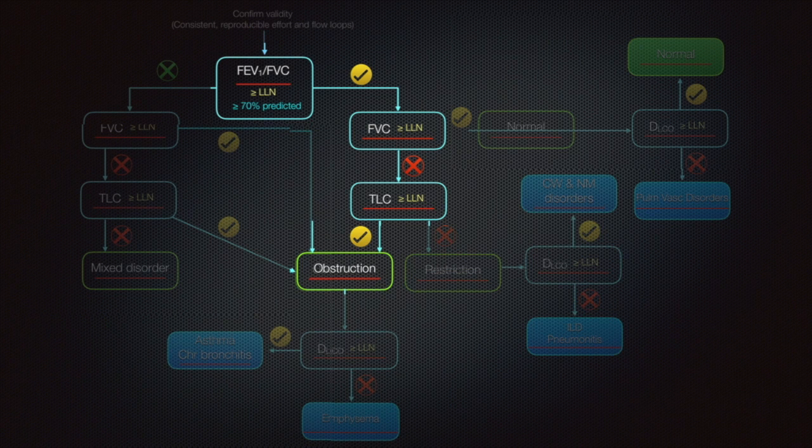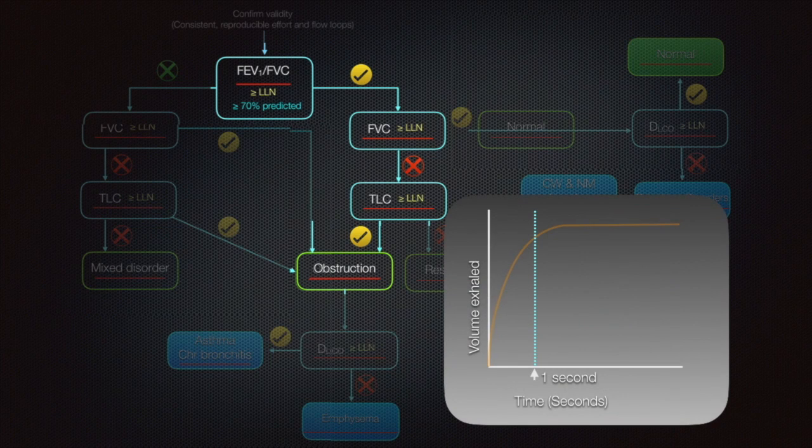Now suppose TLC is in the normal range, we cannot diagnose restrictive lung disease. We may be dealing with evolving obstructive pathology which requires further evaluation. The volume tracing may look like this.